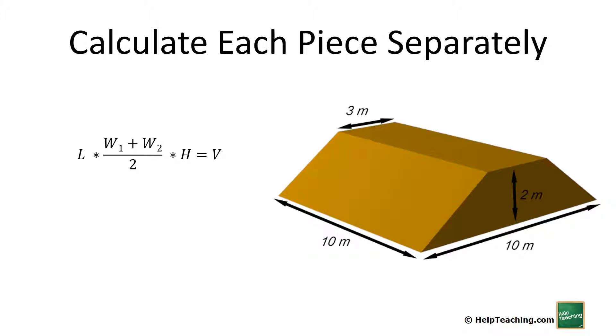In this case we have width 1 (the top) plus width 2 (the bottom) divided by 2 to average the widths, and then we still multiply by length and height same as before. That gives us 3 times (3 plus 10) divided by 2, times 2, which gives us 130 cubic meters.